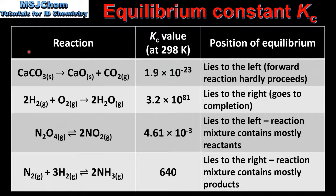Next we look at the significance of the magnitude of the equilibrium constant Kc by looking at four reactions, their Kc values and the position of equilibrium. The first reaction is the decomposition of calcium carbonate to form calcium oxide and carbon dioxide. The Kc value at 298 Kelvin is 1.9 times 10 to the negative 23.